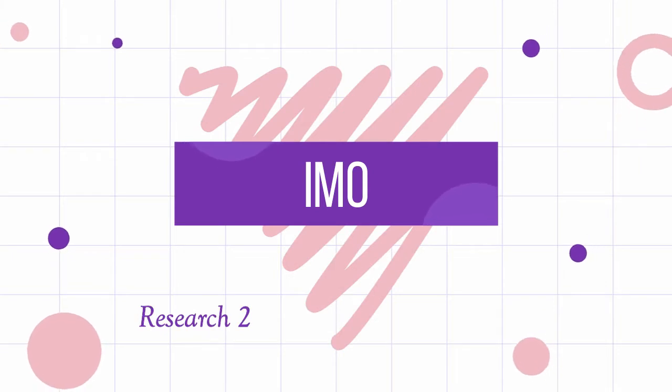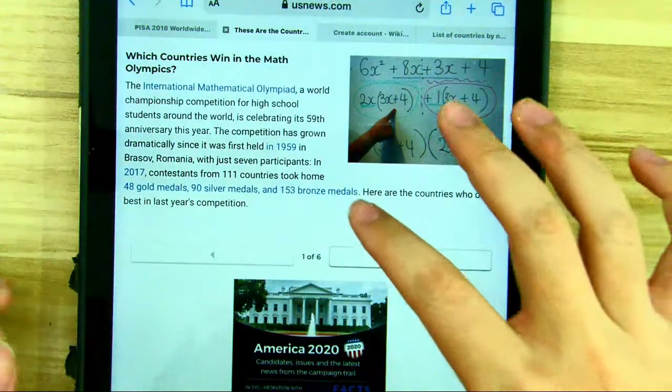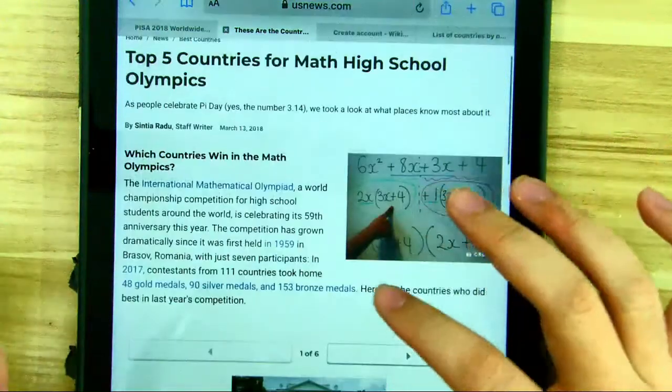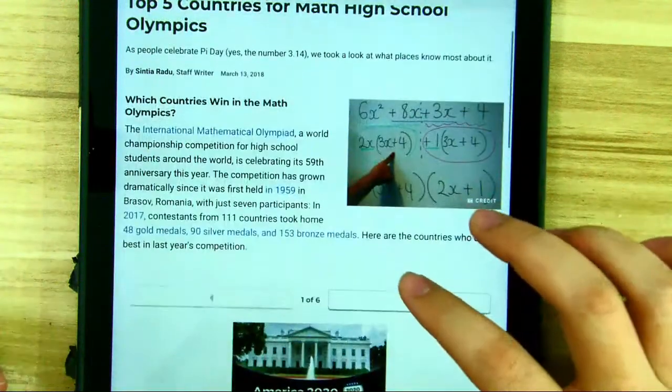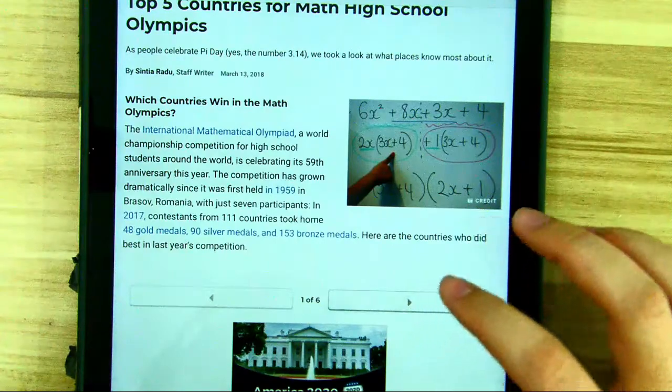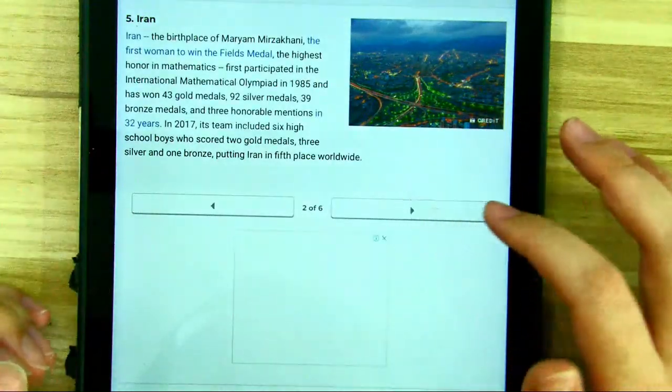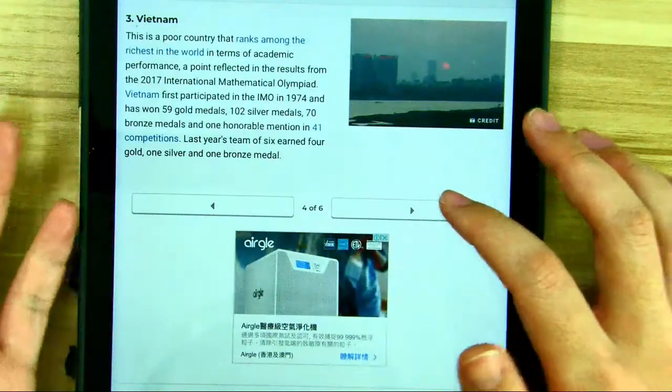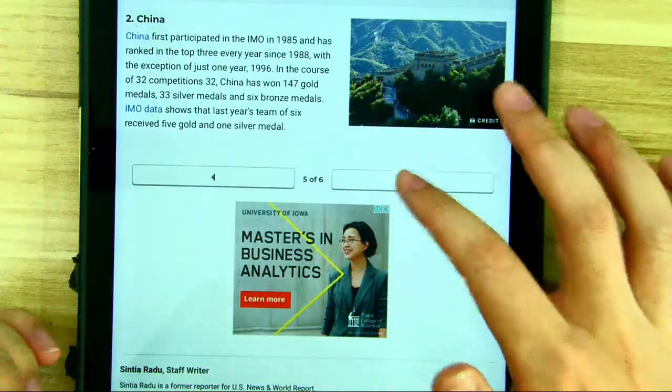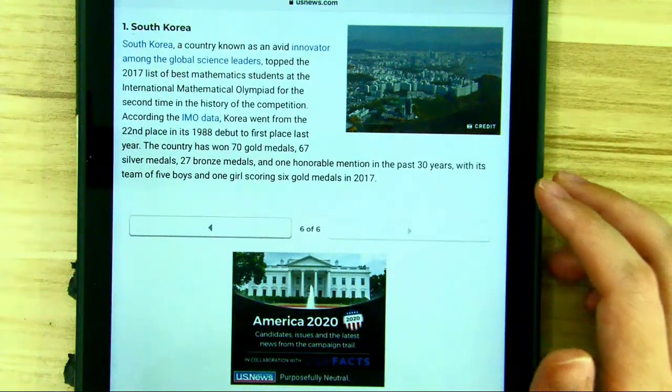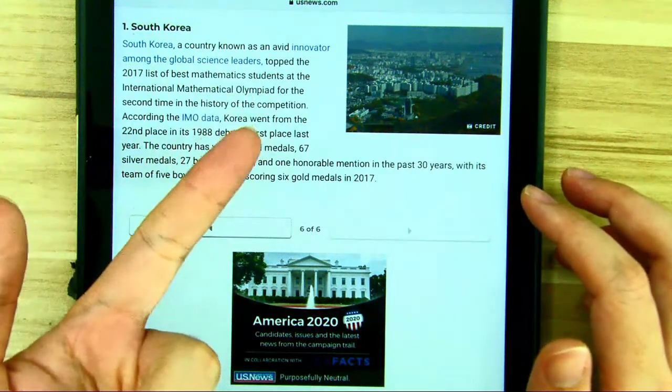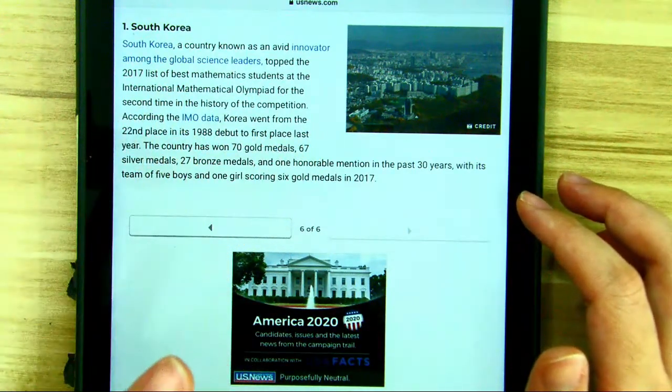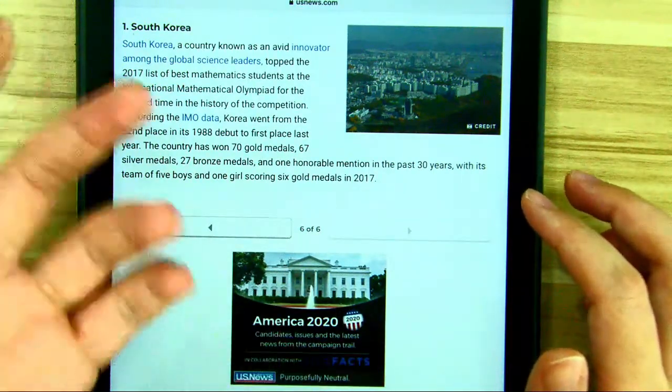Let's turn to IMO. This is usnews.com and it listed the five countries that have the best results in IMO. Which are the five countries? Iran, the US, Vietnam, China, and South Korea. So basically, the Asian countries are South Korea, China, Vietnam and Iran. Seems like most of them are Asians.